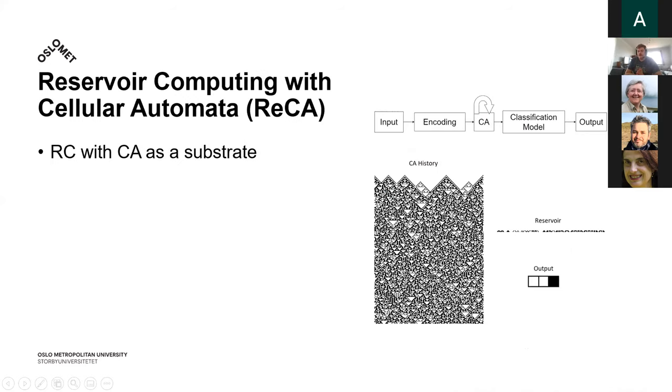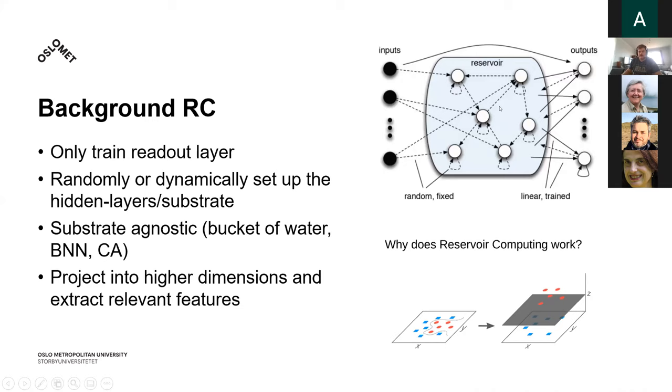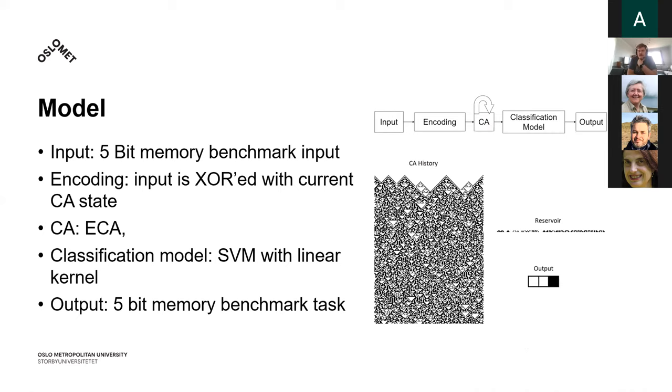So what does that mean when you add cellular automata to that? Well, it's pretty much agnostic, so you could just drop out this thing and add cellular automata instead. But there are some details about how I did that. I specifically tried this very common benchmark called the five bit memory benchmark. I want to encode that benchmark into my substrate being my cellular automata. I did that specifically by inputting the task and XORing it with the current state of the cellular automata. My cellular automata is a limited cellular automata and it can permeate more times than the actual input, meaning that you can have several cellular automata steps before you input again. The classification model that I specifically use, or my output layer, is a support vector machine with a linear kernel, linear being very important. And my output is the target output of the five bit memory benchmark.